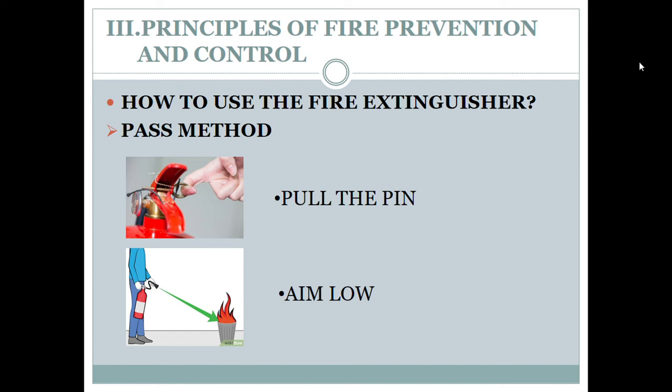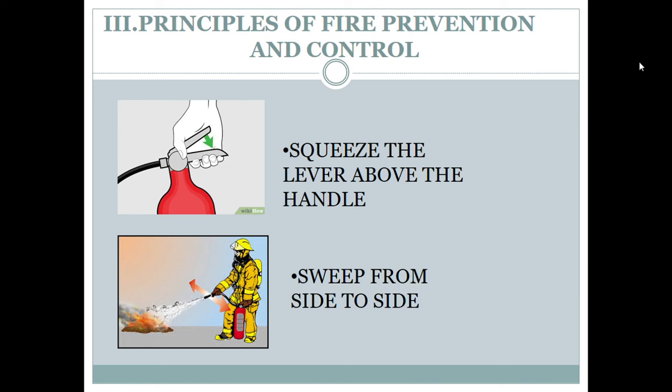How to use a fire extinguisher: remember the PASS method. P stands for Pull the pin — the pin serves as the lock for the fire extinguisher. A stands for Aim — always aim low at the base of the fire. S stands for Squeeze the lever above the handle. The last S stands for Sweep from side to side to extinguish the fire.